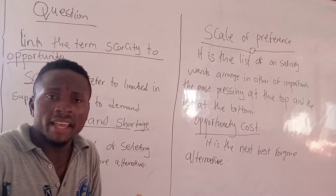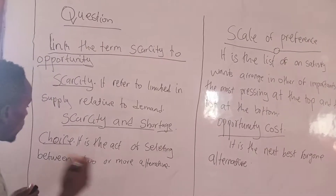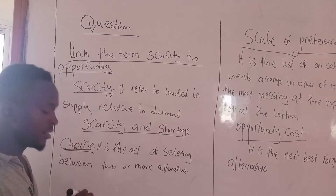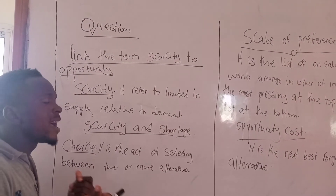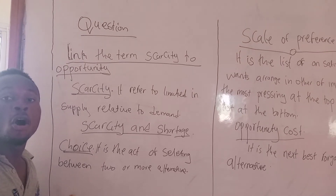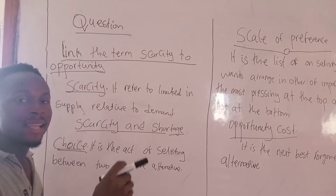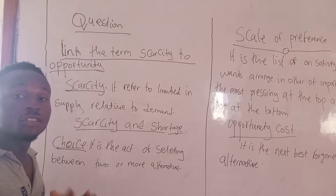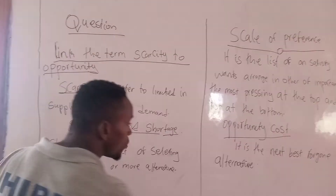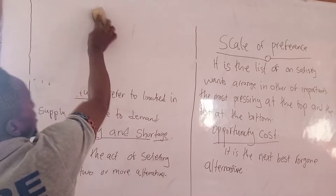When there is scarcity, man is bound to make what is known as choices. Choice is the act of selecting between two or more alternatives. And when you are selecting between two or more alternatives, you need to come up with what is known as the scale of preference.